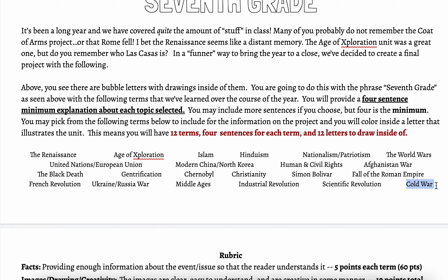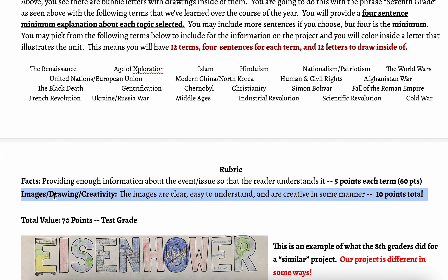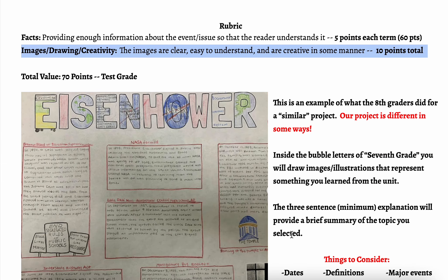So these are the topics. Mr. Berry has already uploaded all of the documents onto the blog for you, so you should be able to find them — they're on the right side. Now, facts: providing enough information for each of the events and issues is five points each term. That's 60 points — 12 times five, 60 points. Images and drawings and creativity: 10 points.